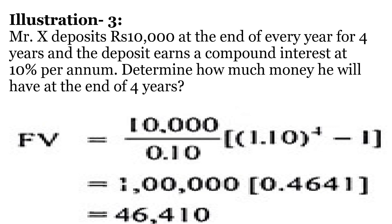Illustration: Mr. X deposits Rs. 10,000 at the end of every year for the next 4 years and his deposit earns compound interest of 10% per annum. Determine how much money he will have at the end of 4 years. Here the amounts are equal and the intervals are equal, so it is a perfect case of annuity. After putting the values into the formula we get Rs. 46,410. This means Rs. 46,410 would be accumulated in his account at the end of the 4th year.